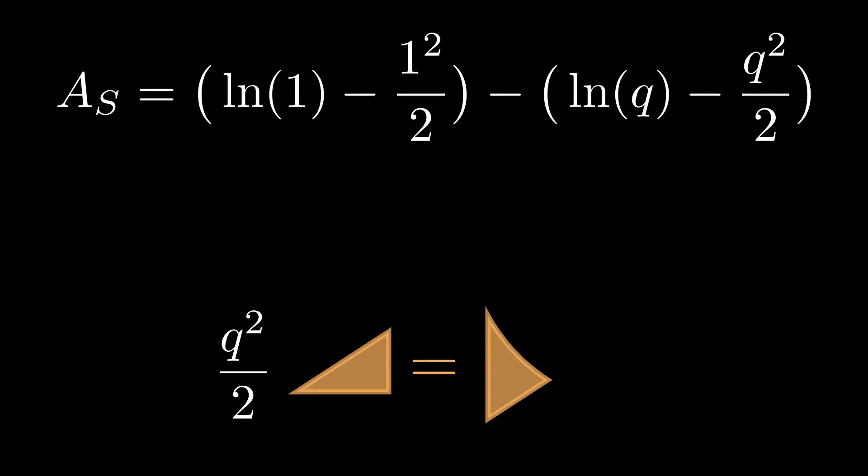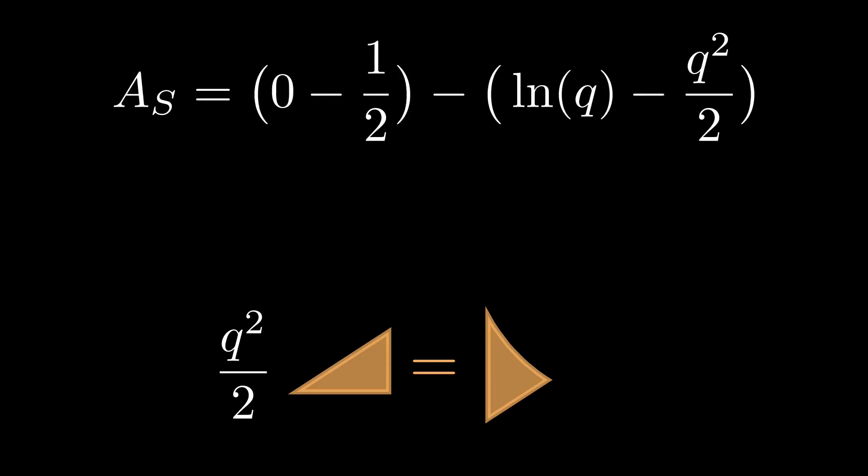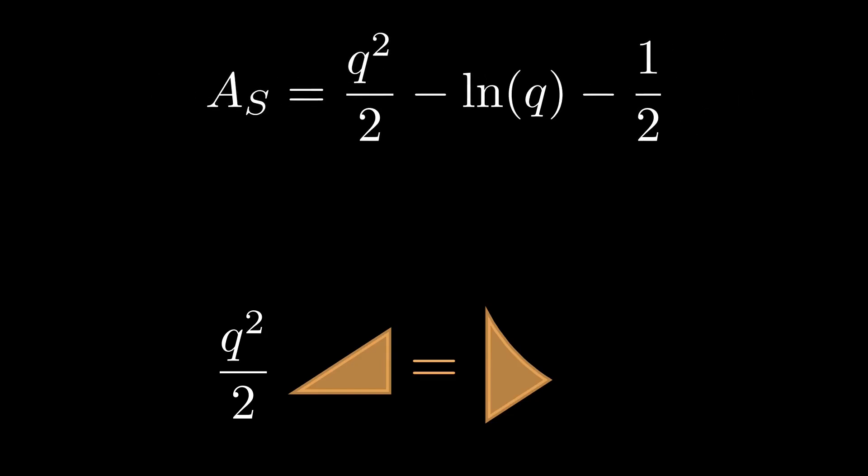And then we can go on algebra autopilot, keeping in mind that the natural log of 1 equals 0, and that subtracting a negative gives a positive. We eventually arrive at As is equal to q squared over 2 minus the natural log of q minus 1 half.